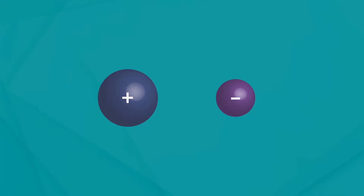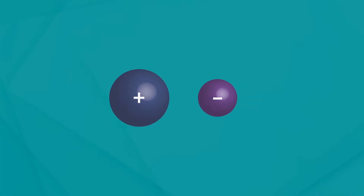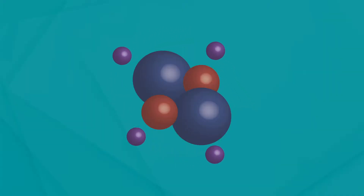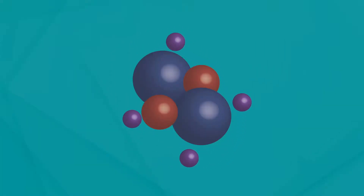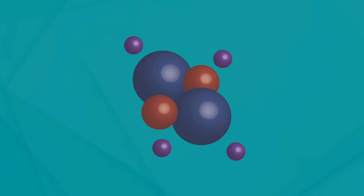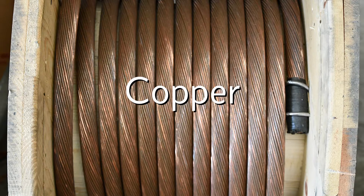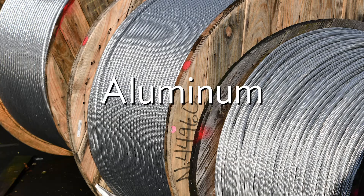Opposite charges attract. That means that the electrons and protons are attracted to one another. In a lot of atoms, this attraction is enough to keep electrons in their orbits around the nucleus. But sometimes the electrons in the outermost shells of an atom don't have a strong attraction, which means they can be pushed out of their orbits. For example, metals like copper and aluminum have loosely held electrons, so they can be pushed from their shells by moving magnets over them.